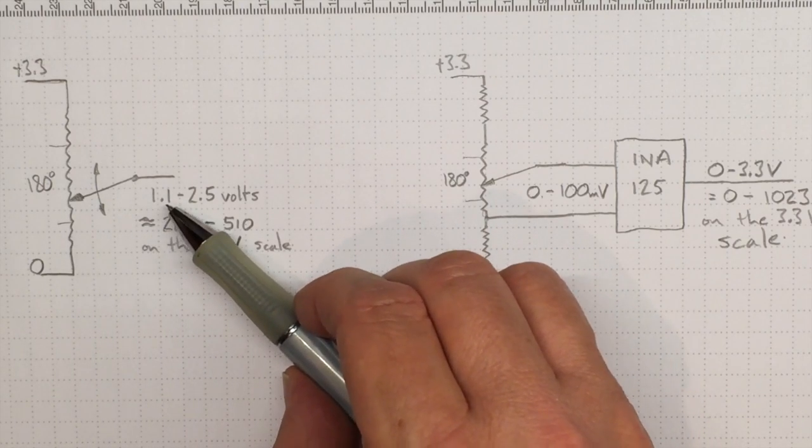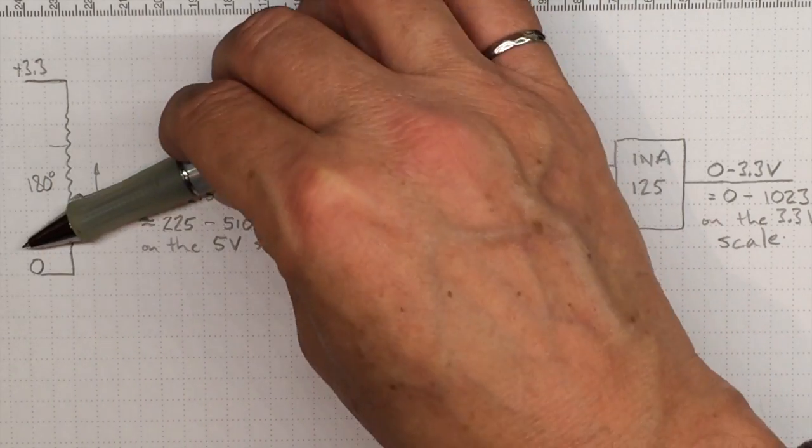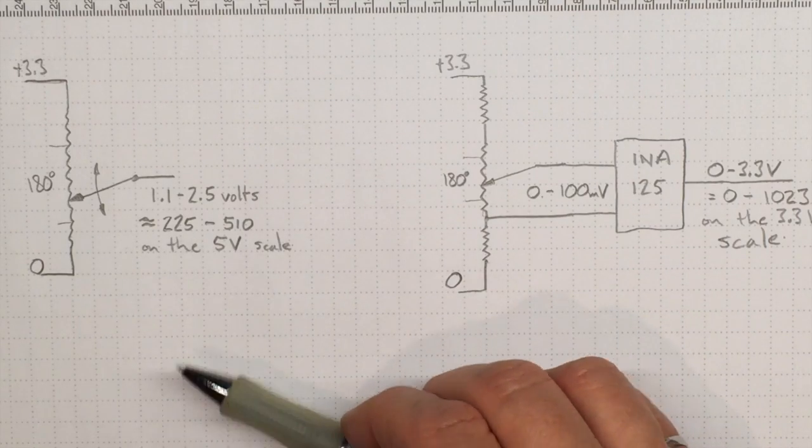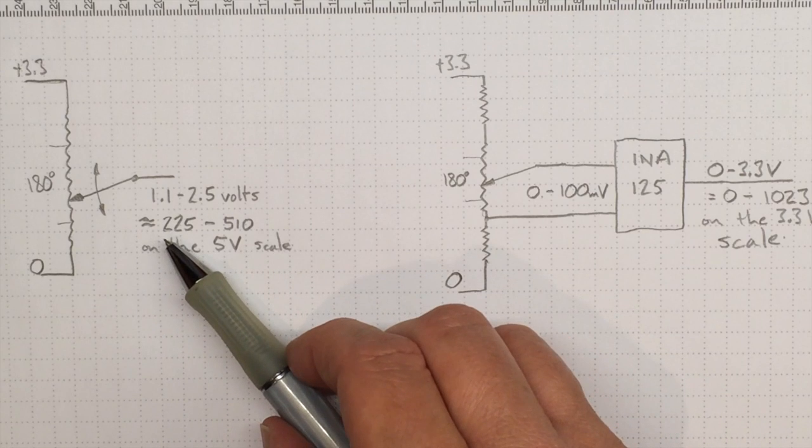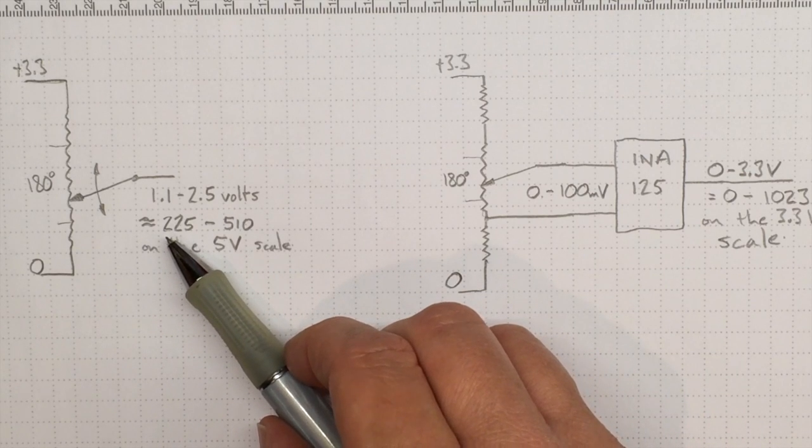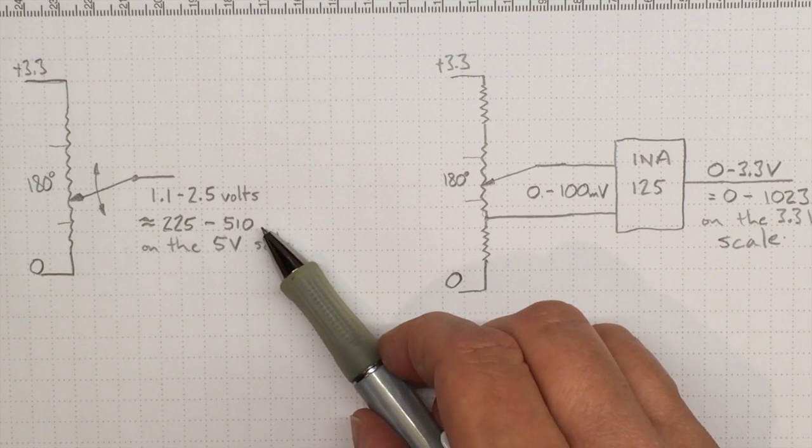I tried that and I got about 1.1 to 2.5 volts out when I did that. And if I measured that on the 5-volt scale, that would give me analog read values between about 225 and about 510.